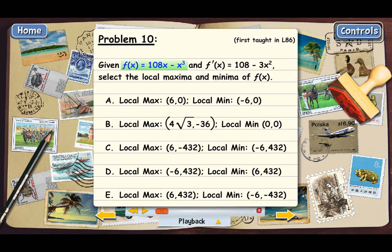Given the function f(x) = 108x - x³ and f'(x) = 108 - 3x², select the local maxima and minima of f(x).